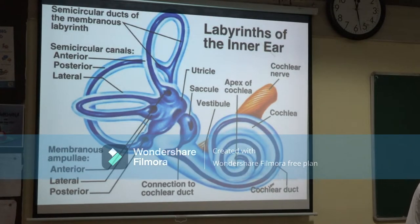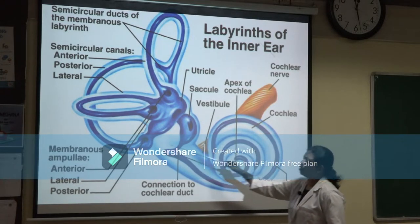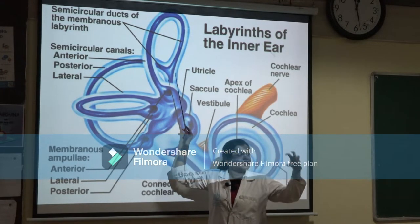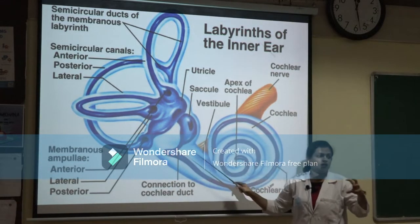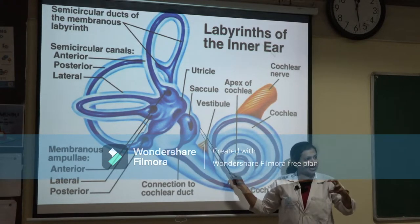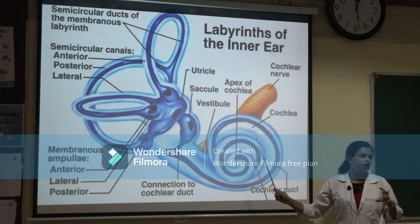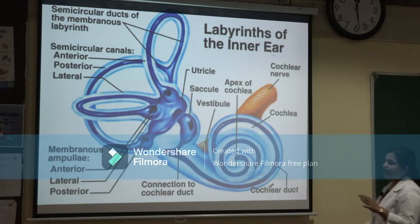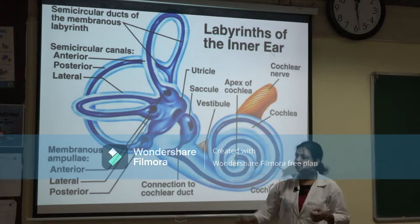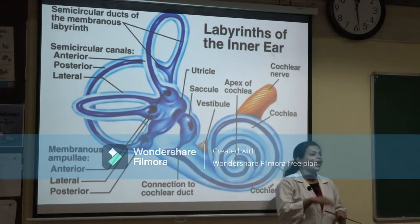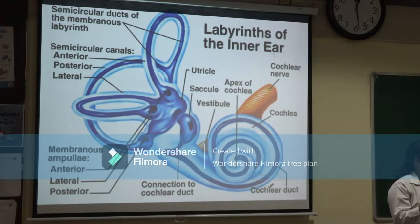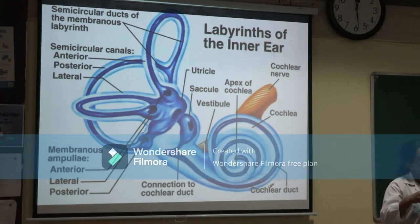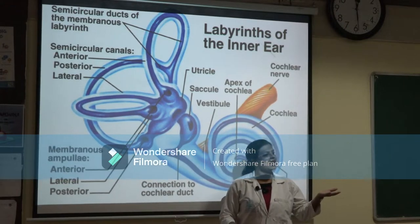The outside is the bony labyrinth. Inside is the membranous labyrinth — within the bony semicircular canal is the membranous semicircular canal; in the bony vestibule are the utricle and saccule; in the bony cochlea is the duct of cochlea. The bony labyrinth contains a fluid called perilymph, whose composition is similar to extracellular fluid. The membranous labyrinth contains endolymph, whose composition is similar to intracellular fluid.